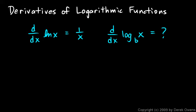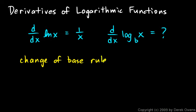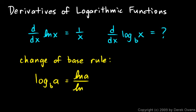What is that? b can be any number, so we want to differentiate base-b logarithms. To do this, we need to remember the change of base rule for logarithms. The change of base rule says: log base b of a equals the natural log of a over the natural log of b.